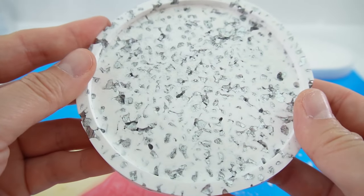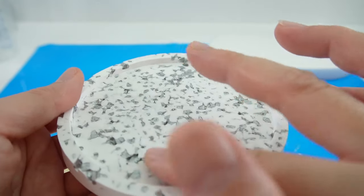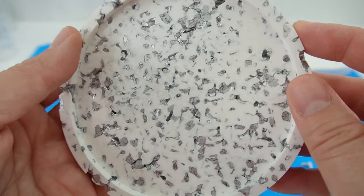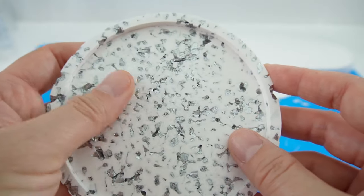But if you want it to be filled in, what you can do is just add a very thin layer of regular epoxy resin. And then you'll be nice and smooth.